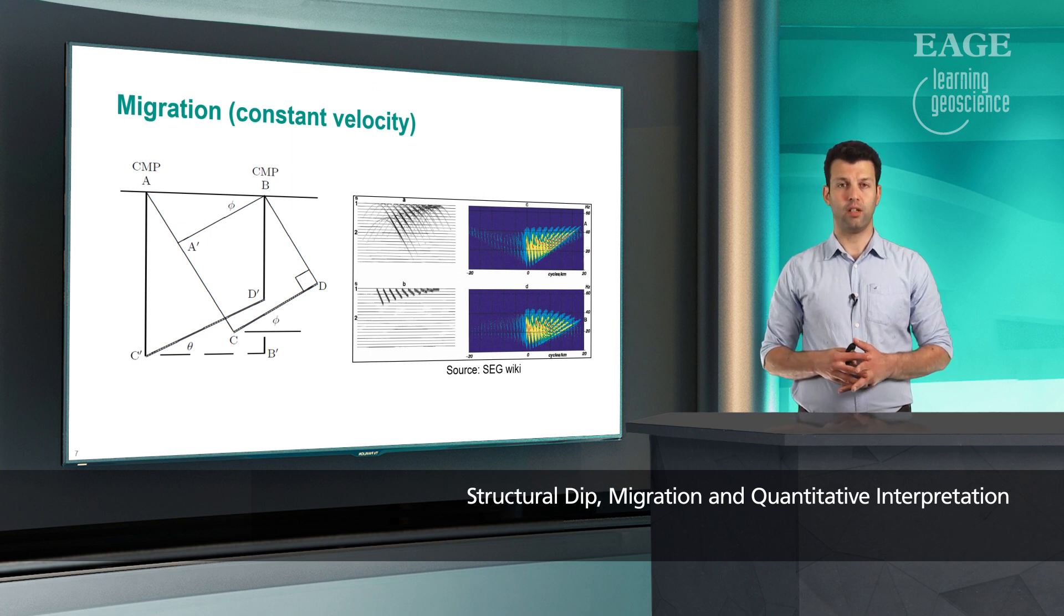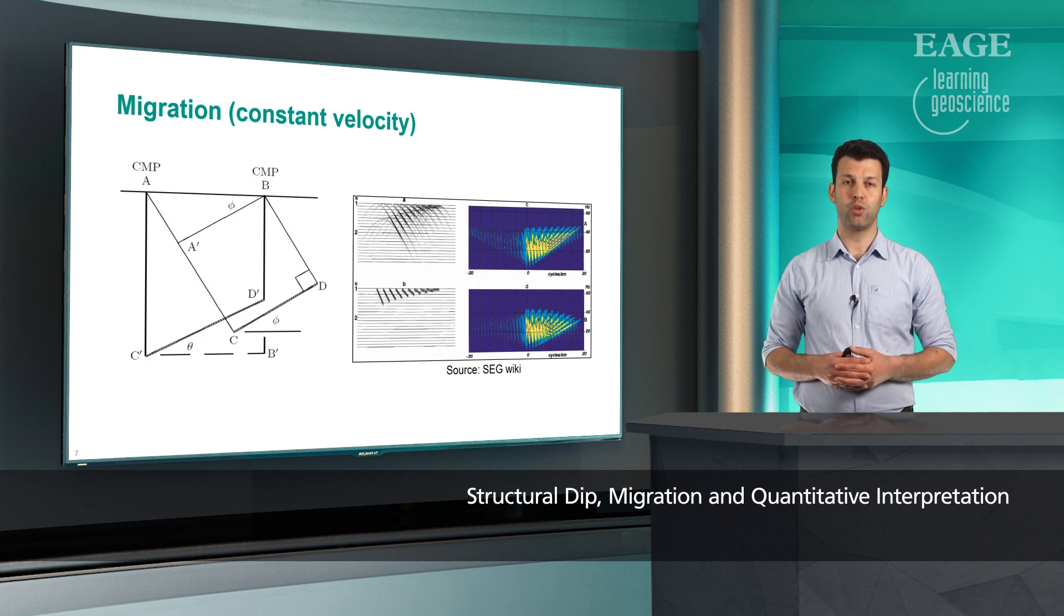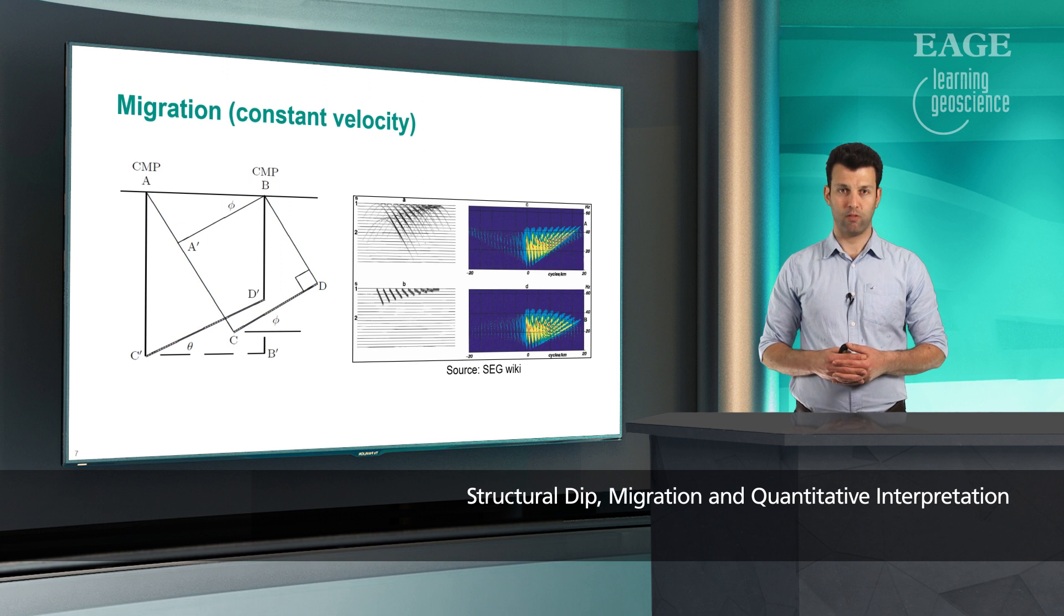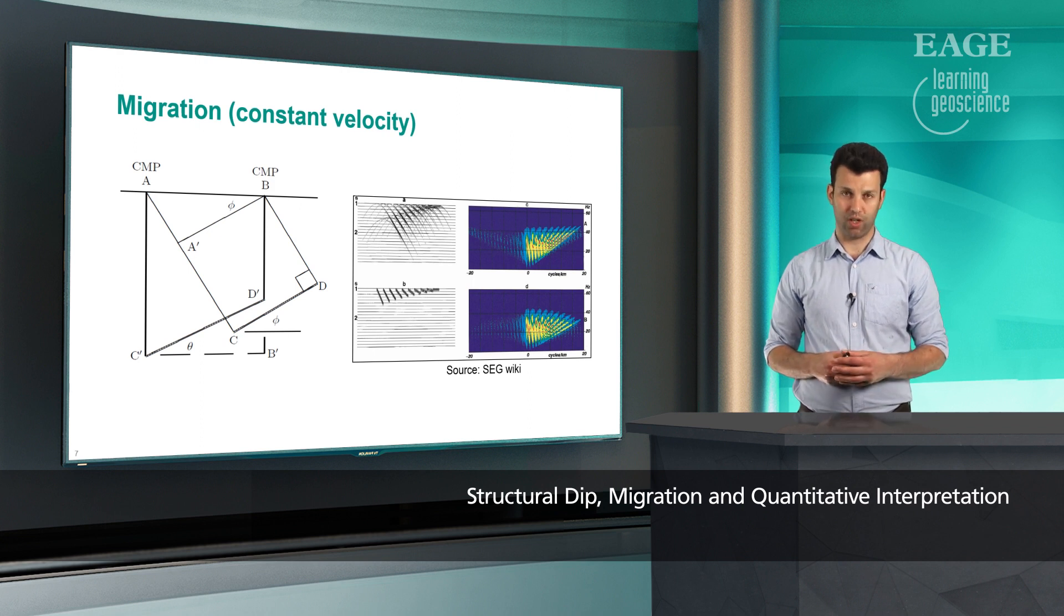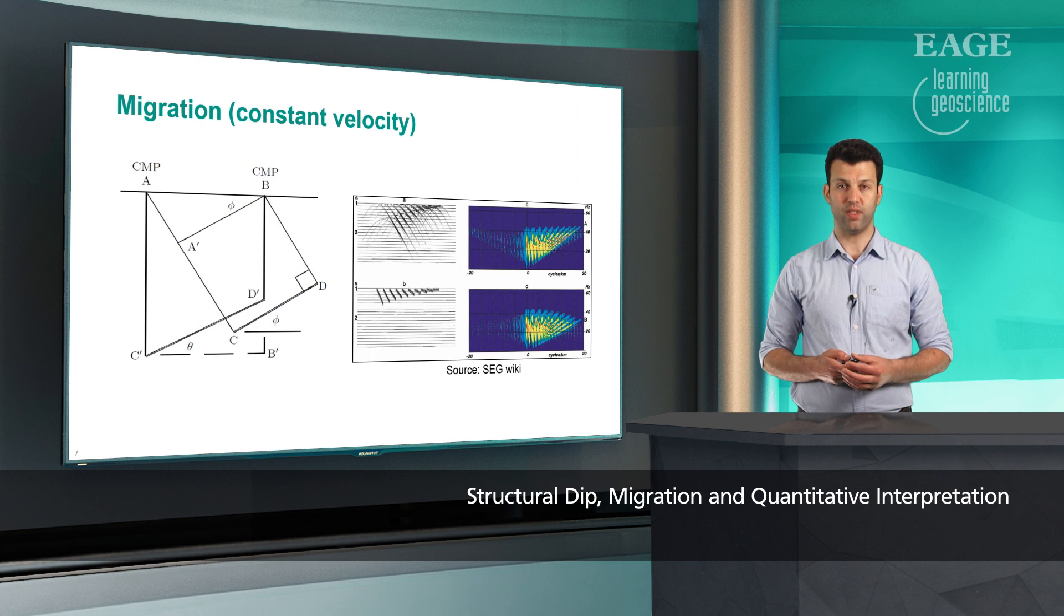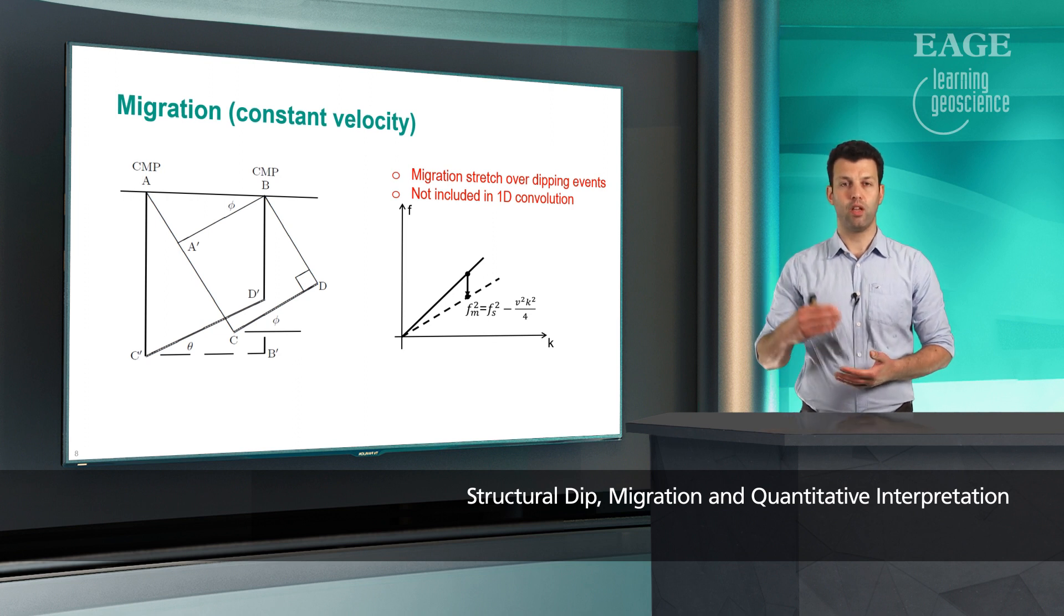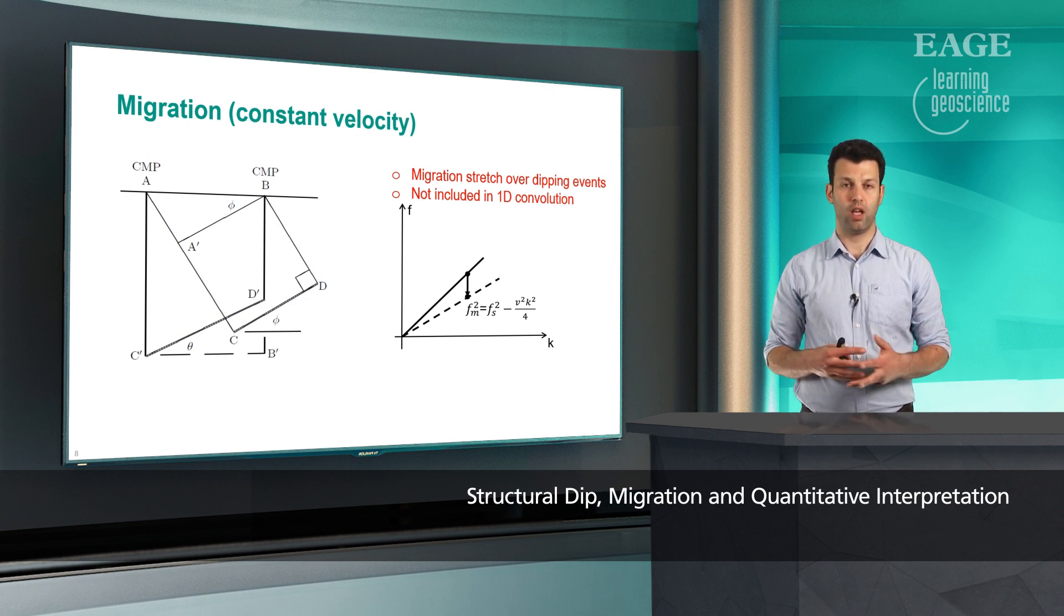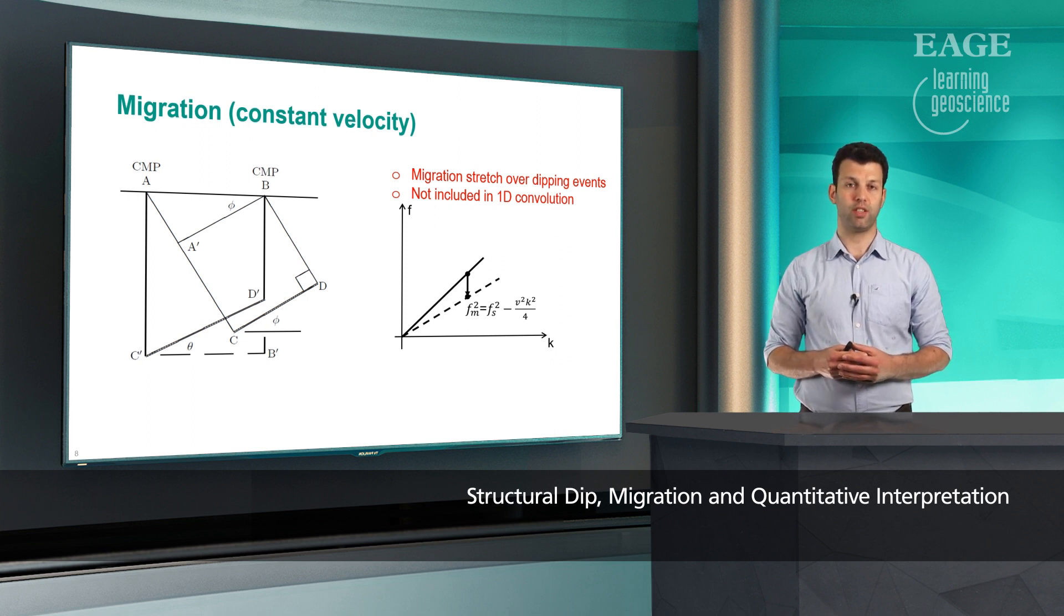In the FK domain, we can visualize it perhaps easier, and that is shown on the right hand side image. The top right figure shows the pre-stack dipping events, and once we migrate them, events are moving up dip. In the FK domain for each K, the frequency shifts towards lower frequencies. The solid line is the pre-migrated event, and once migrated is the dashed line. For each K, the frequency is shifted towards lower frequencies, and that is governed by the velocity of the medium.